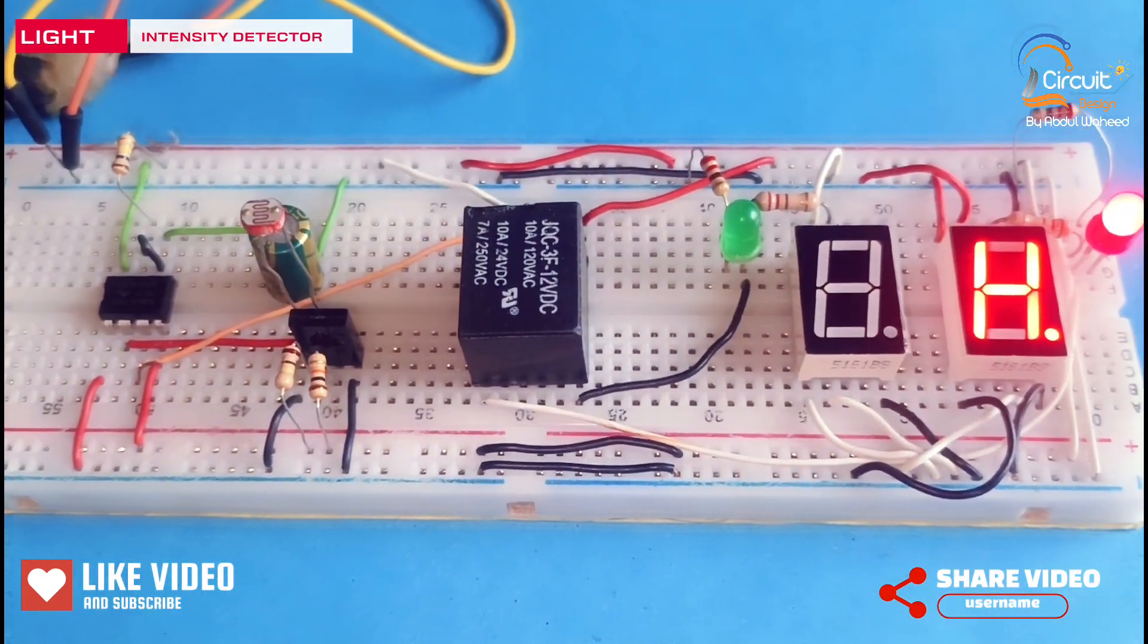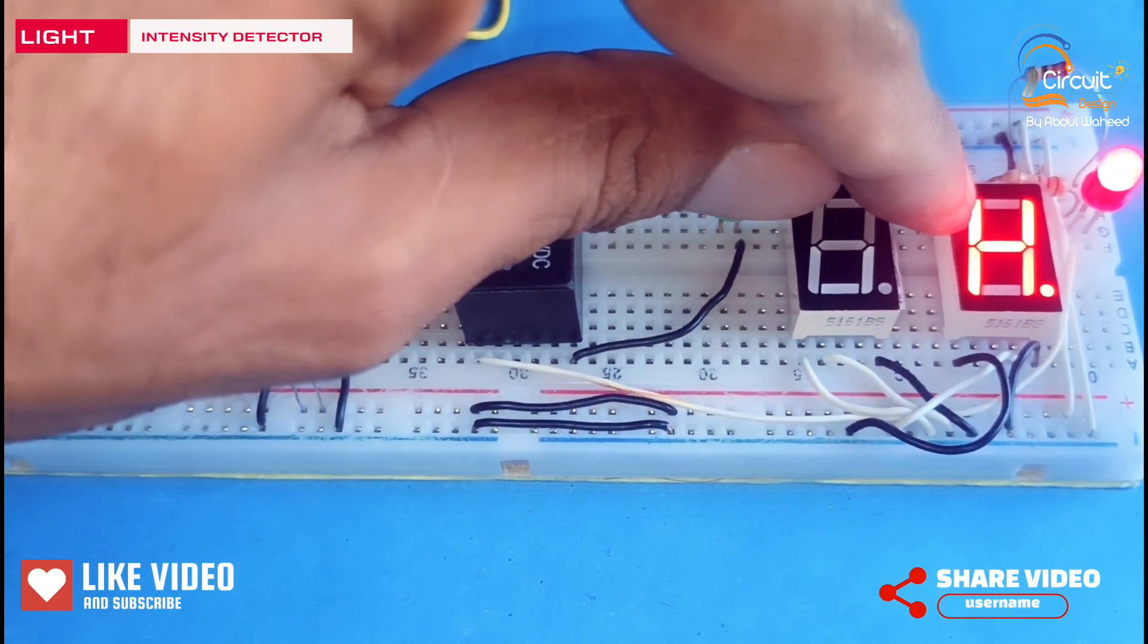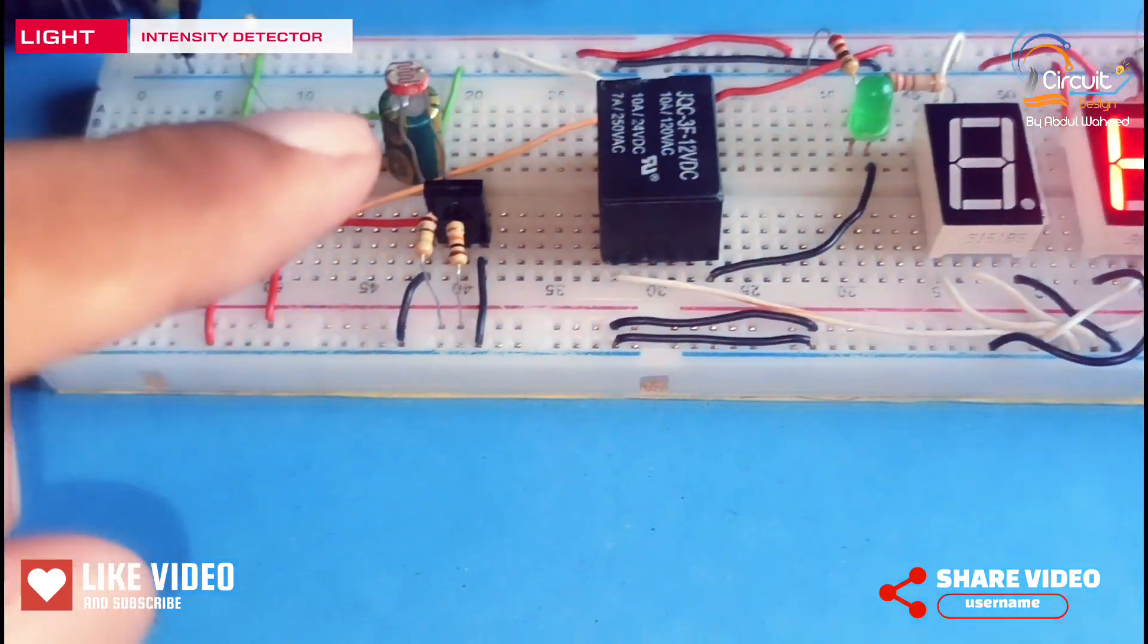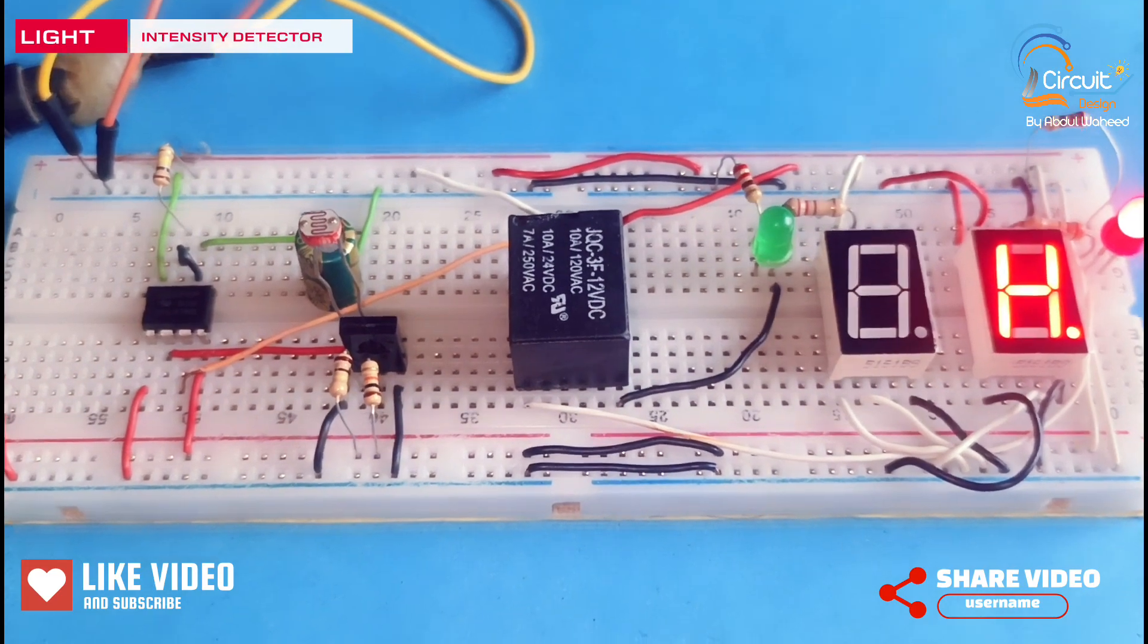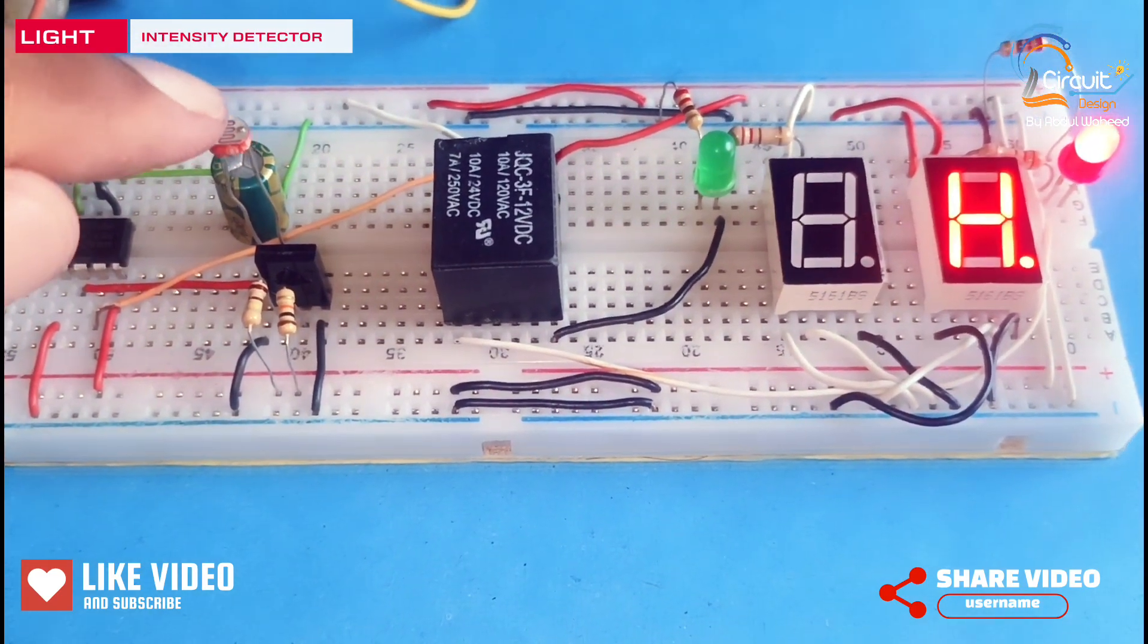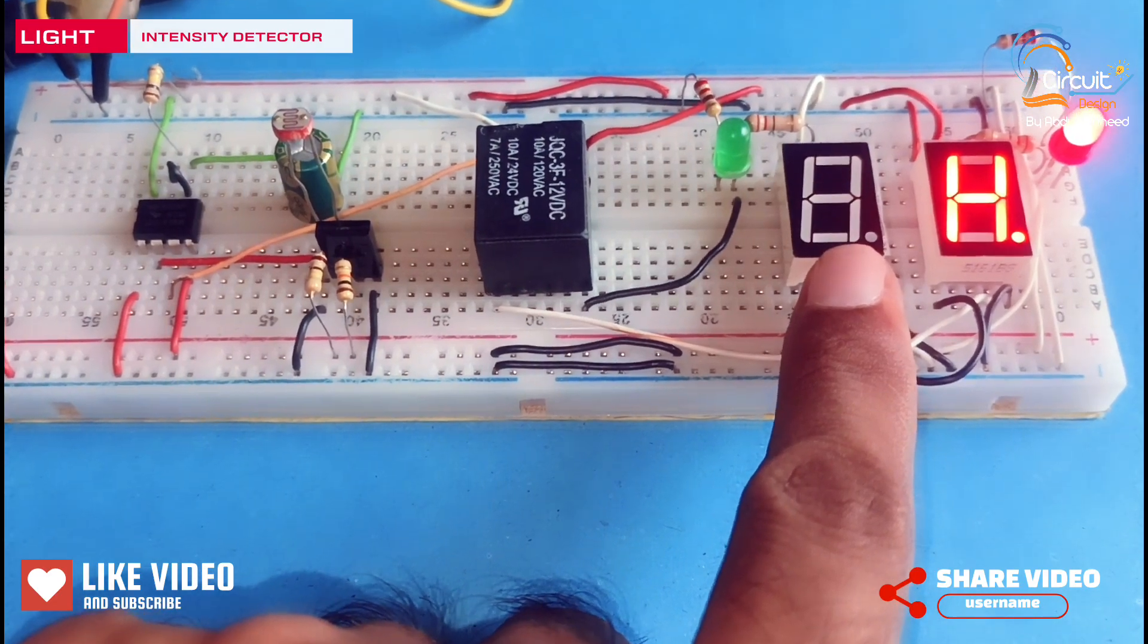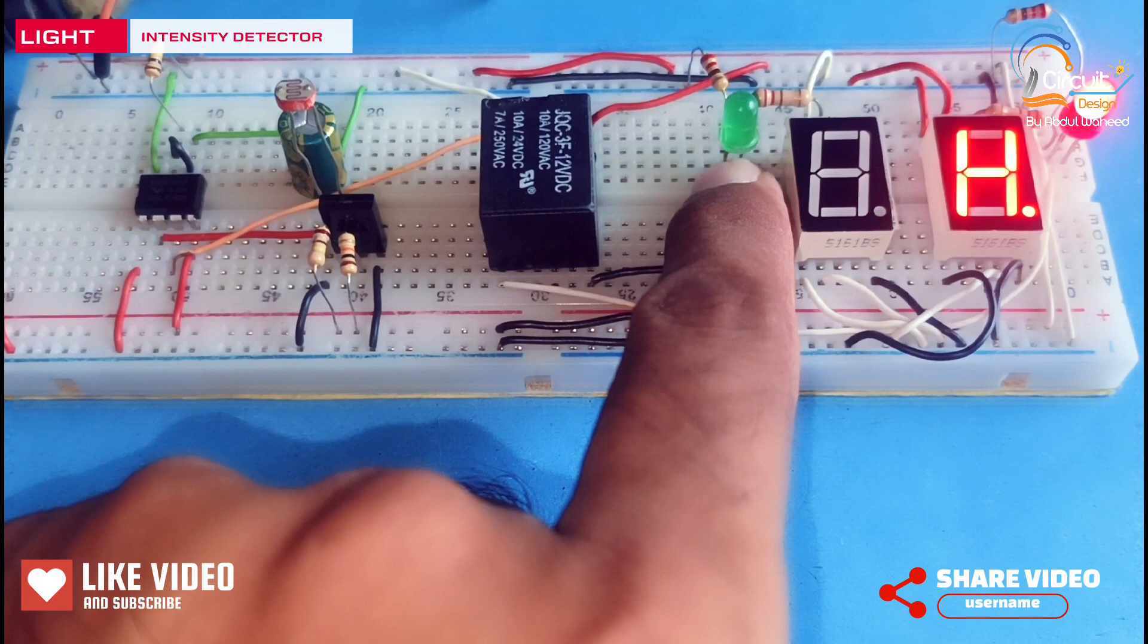Friends, you can see here seven segment display shows letter H and red LED is on for high intensity of light. If I decrease the intensity of light around the LDR, then this seven segment display will show letter L and this green LED will be on.